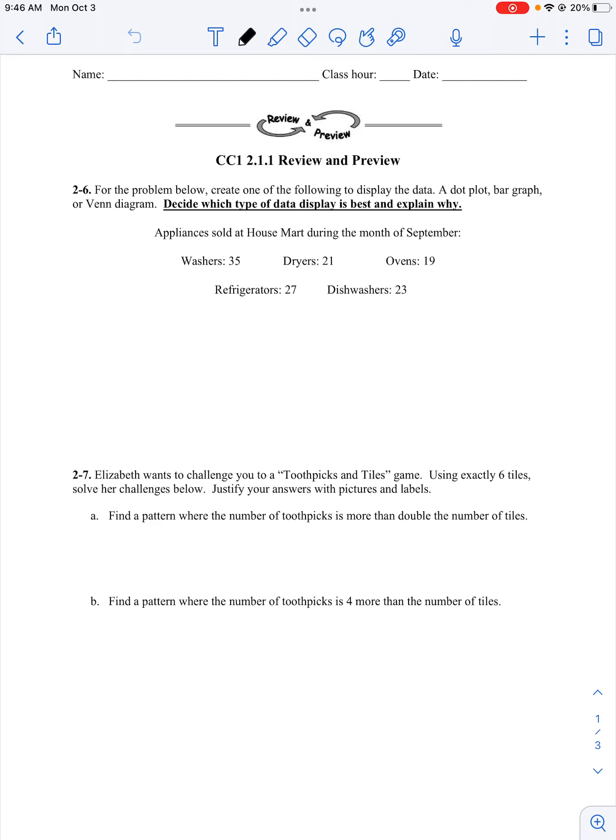So we have appliances sold at Housemart during the month of September. We have washers, dryers, ovens, refrigerators, and dishwashers. Because my data is categorical, meaning I have all these categories, I want to create either a bar graph or a Venn diagram. However, there's no overlapping data, which is why I would want a Venn diagram. So because I don't have overlapping data, I want to create a bar graph.